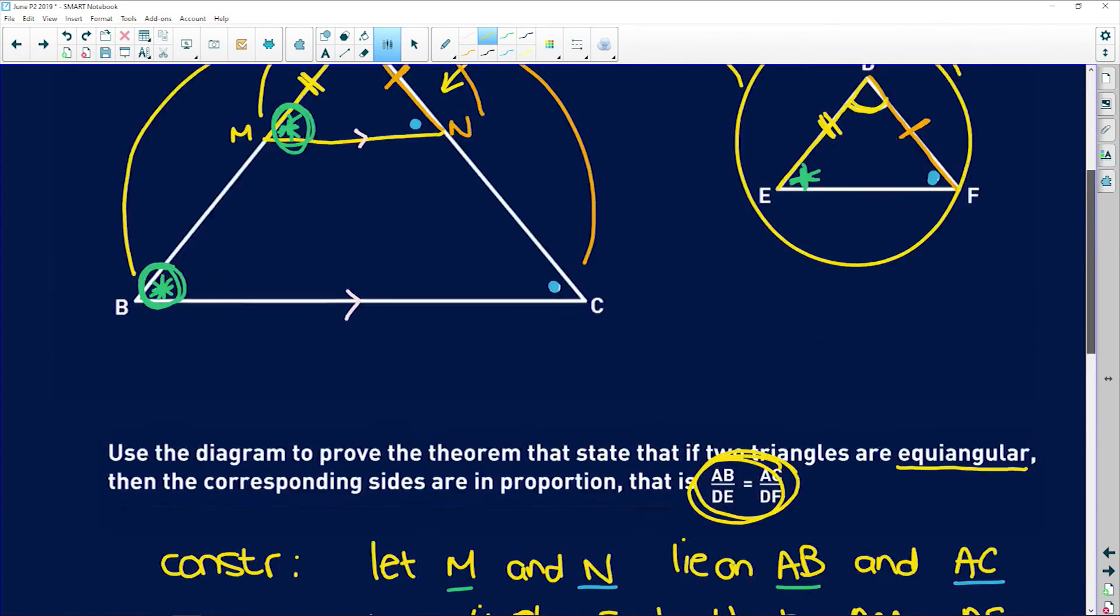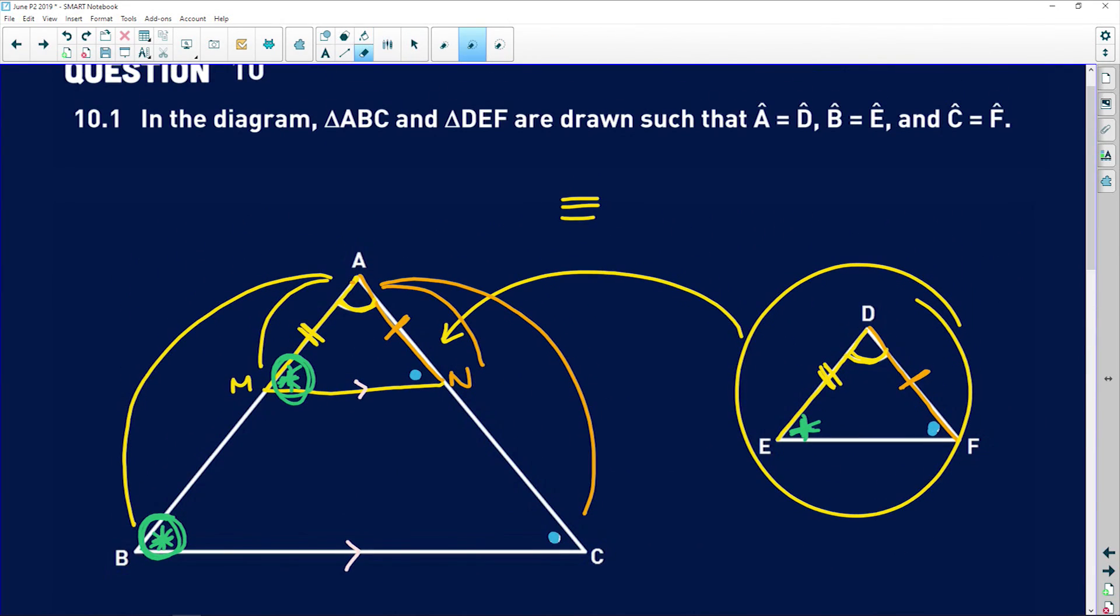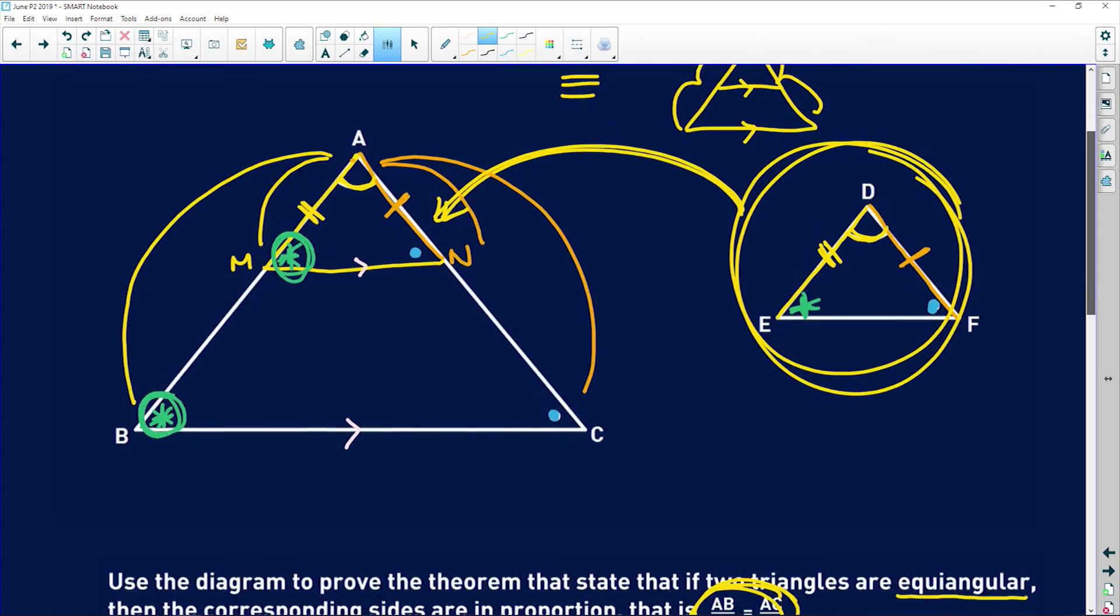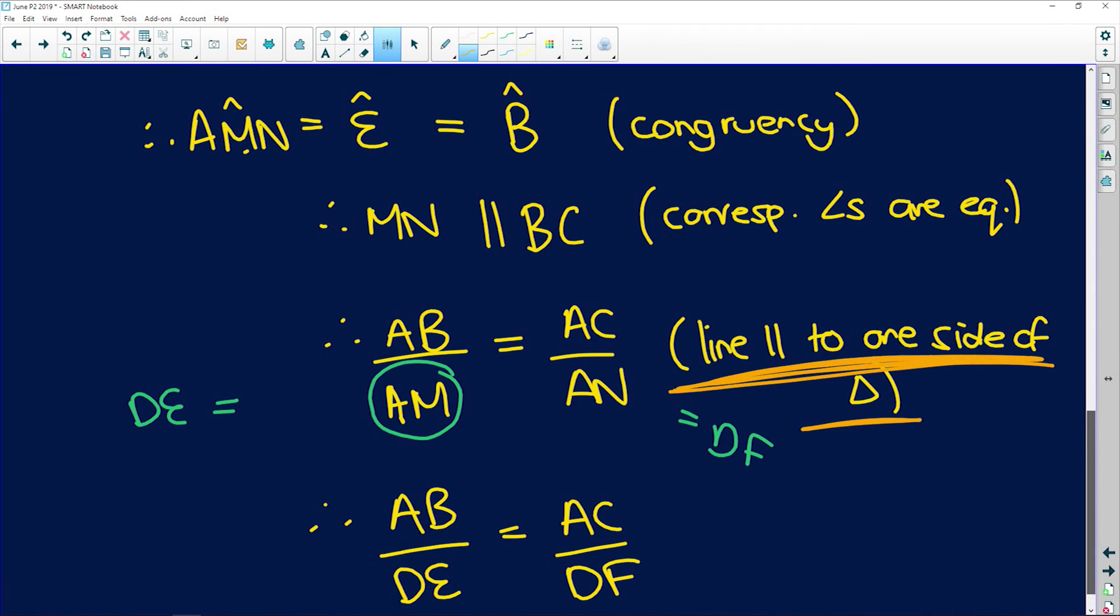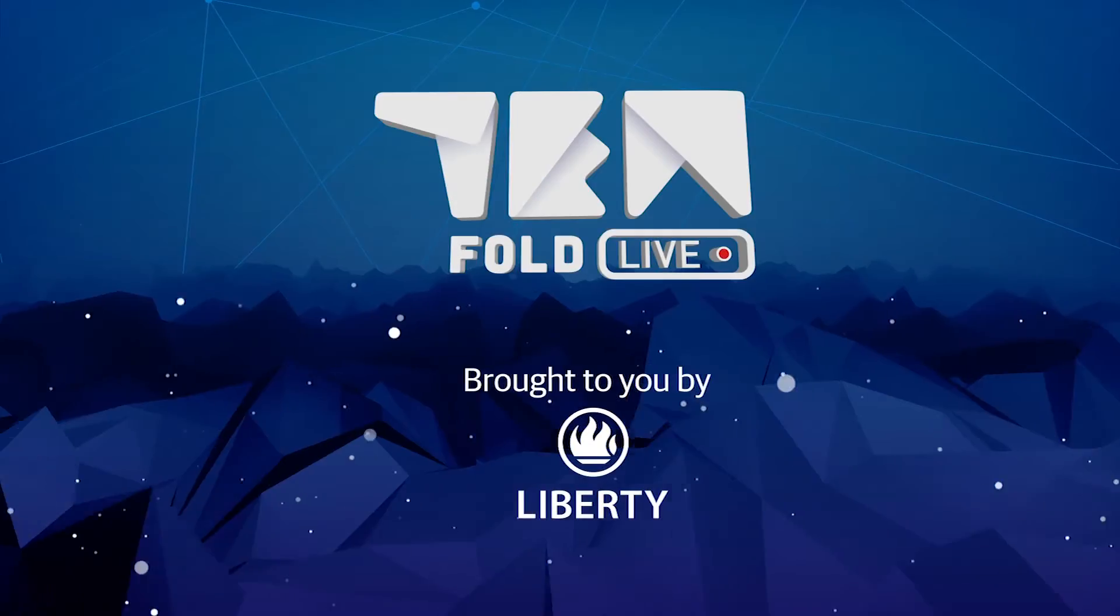So with this proof, guys, you're basically trying to establish the triangles that have equal angles are in proportion. So what you wanted to do is exactly what I've circled here. You're trying to get that triangle into this one so that you can use this theorem, that if you have parallel lines, these are in proportion. So make sure with your proofs, you understand which theorems you can already use, which was this one in this instance, and then establish a scenario that allows you to use that theorem. And that is question 10.1.